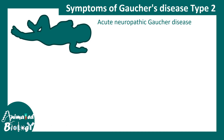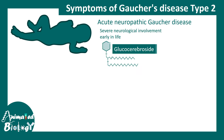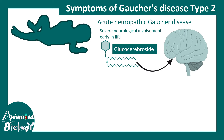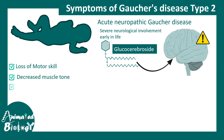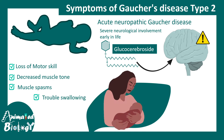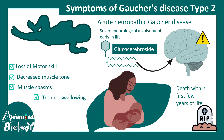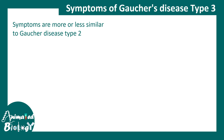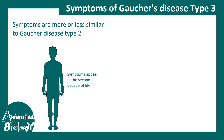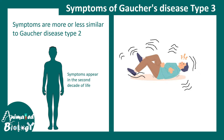Type 2 Gaucher's disease is an acute neuropathic condition. Glucocerebroside accumulates in the brain, causing problems with motor skills, decreased muscle tone, muscle spasms, and trouble swallowing in babies. Death may occur within the first few years of life. Type 3 involves neurological symptoms that appear later — seizures can occur from the teenage years into adulthood, not with very early onset.